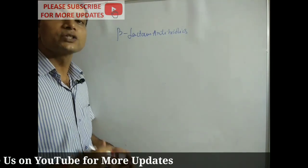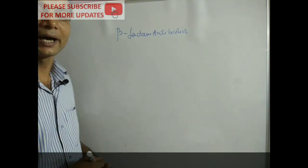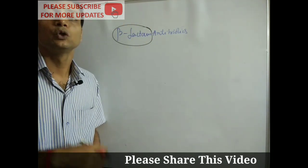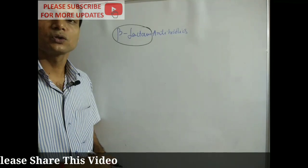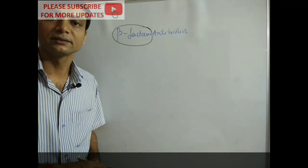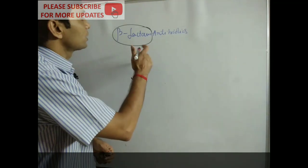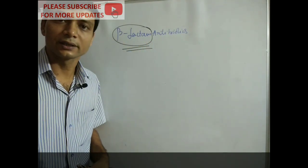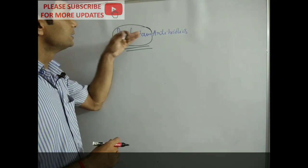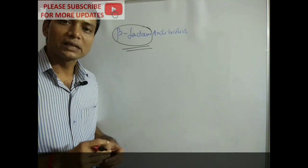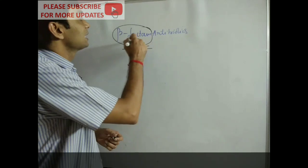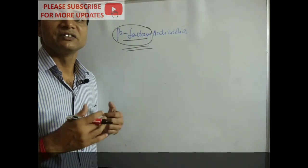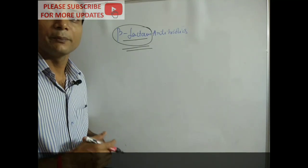Those antibiotics which have this beta-lactam ring as a core chemical structure are known as beta-lactam antibiotics. Now, let's see what is actually this beta-lactam ring and why is this ring called the beta-lactam ring.